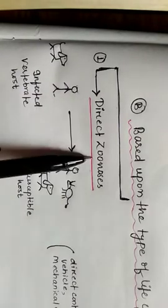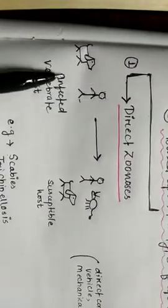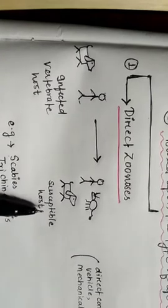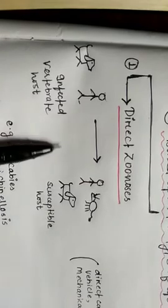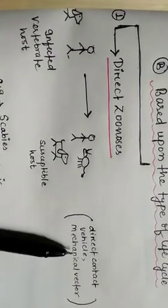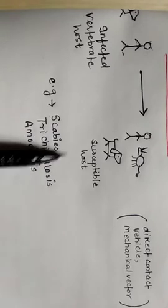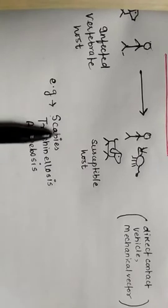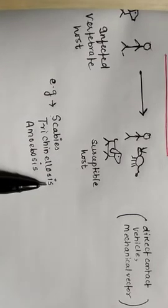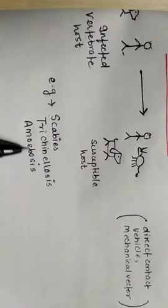The first is direct zoonosis. In direct zoonosis, the infected vertebrate host transmits the disease to the susceptible host, which can also be a vertebrate. And this disease is transmitted via direct contact between the animals or by any vehicle or by any mechanical vector. Taking the example of scabies, scabies is transmitted by direct contact, by skin-to-skin contact. The other example is trichinolosis or trichinosis, which is transmitted by the consumption of the infected pork. And the other example is amoebiosis.